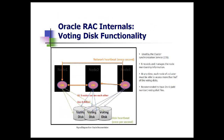At any given time, each node of a cluster must be able to access at least more than half of the voting disks. That's why it is recommended to have voting disks in odd numbers. As you can see in this picture, we are doing the network heartbeat every second, and also we are doing the disk heartbeat.